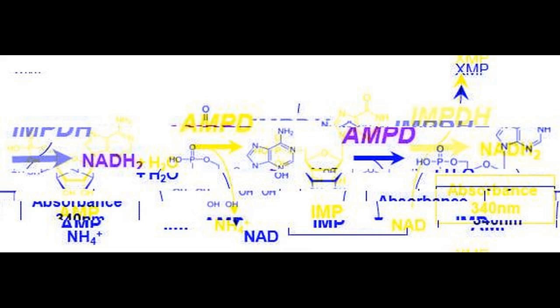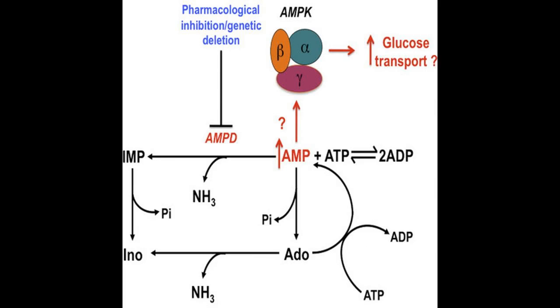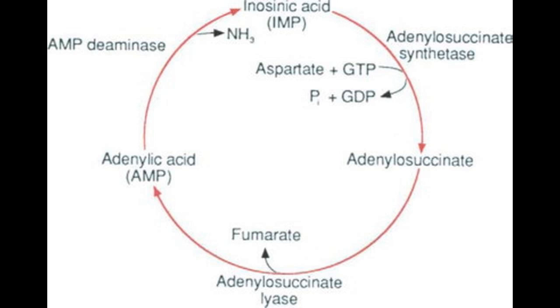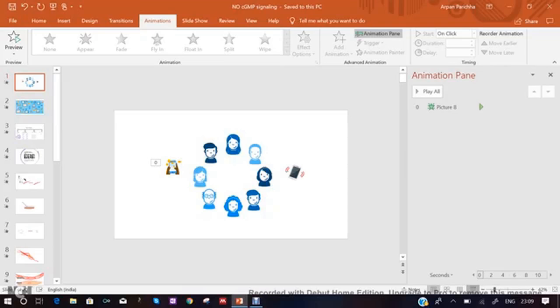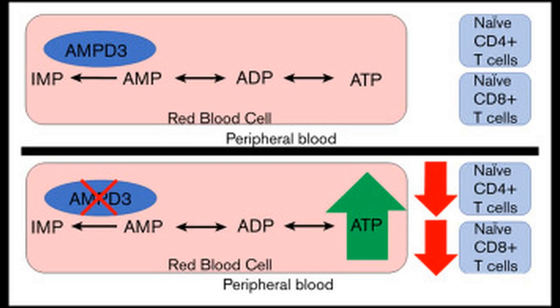In muscle cells with normal AMPD activity, the purine nucleotide cycle would gradually add fumarate to the pool of citric acid cycle intermediates. In muscle cells with AMPD deficiency, the ATP production rate of the citric acid cycle will not be synchronized with ATP demand.